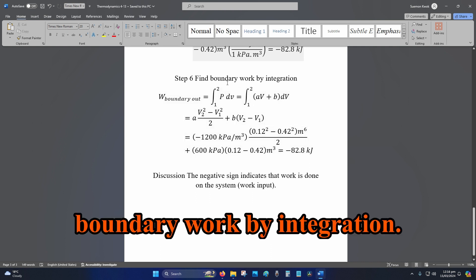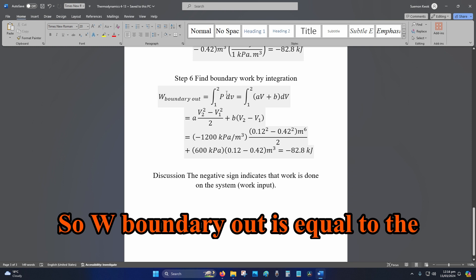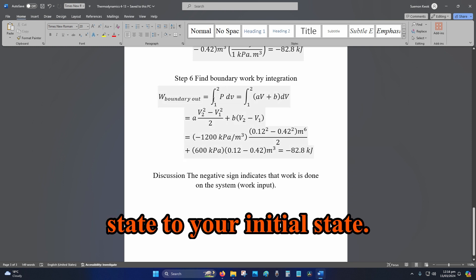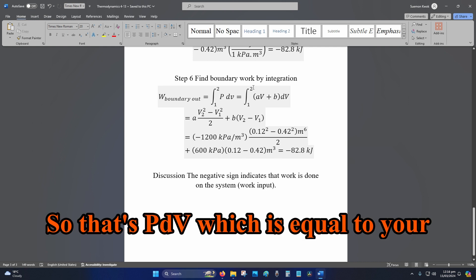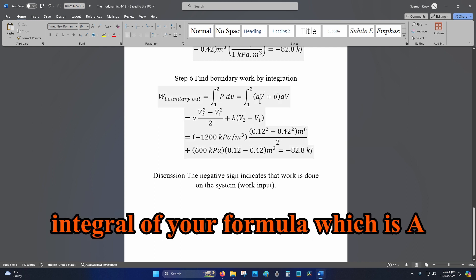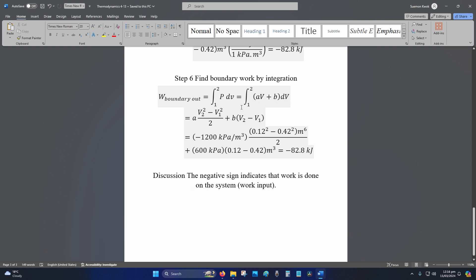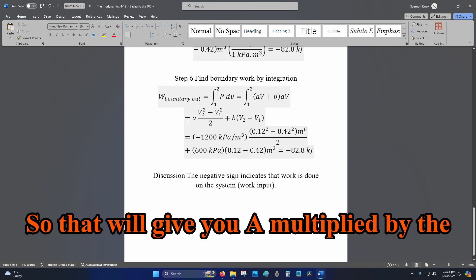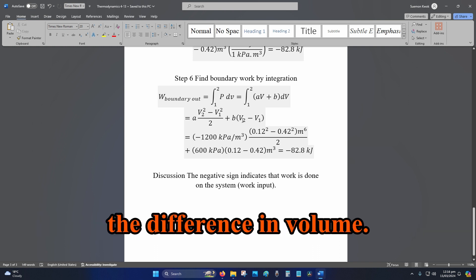Step 6, find the boundary work by integration. So W boundary out equals the integral from your final state to your initial state of PdV, which equals the integral of A multiplied by V plus BdV. That will give you A multiplied by the difference in volume squared divided by 2 plus B multiplied by the difference in volume.